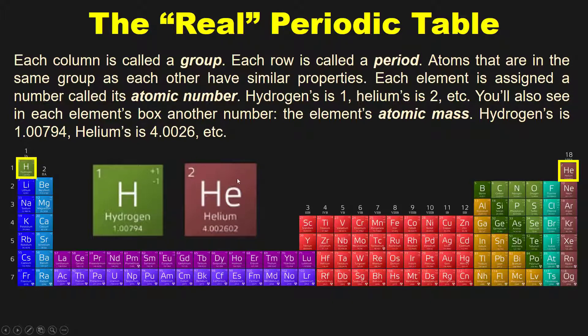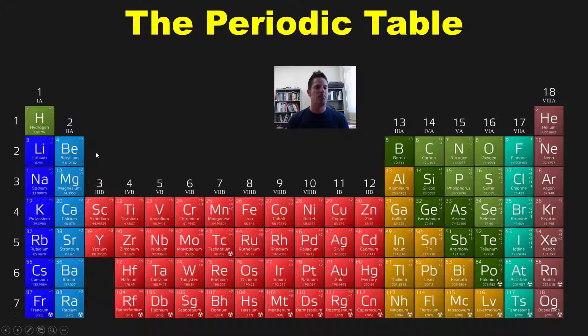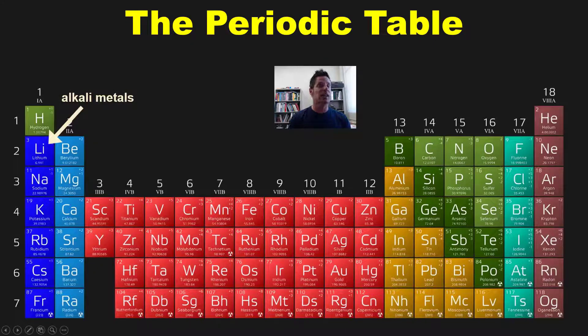Now, there are four different groups or columns that have specific names that I require my university students to know and memorize. Specifically, all of the elements in column 1 below hydrogen - so this does not include hydrogen, it starts at lithium and goes all the way down - these elements are called the alkali metals. All of the elements from beryllium all the way down in column 2 are called the alkaline earth metals.